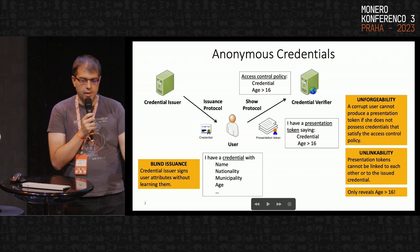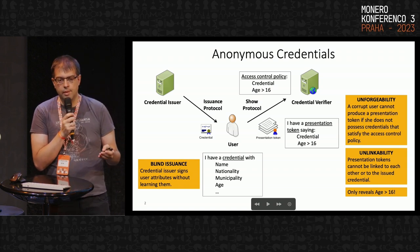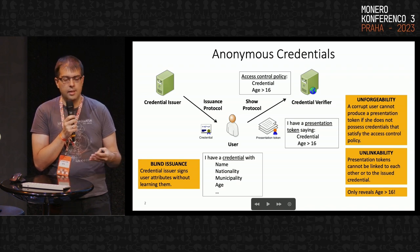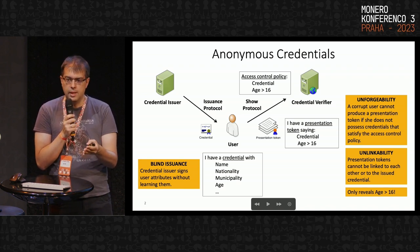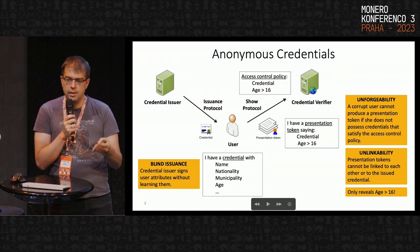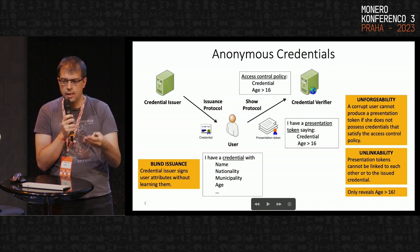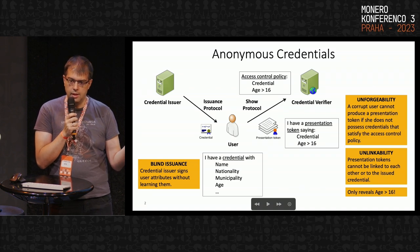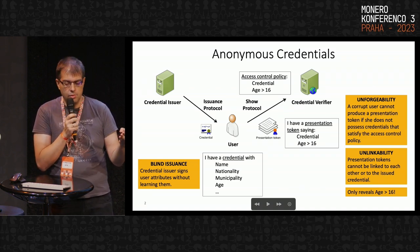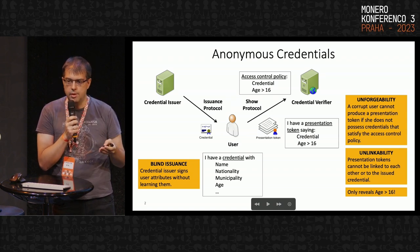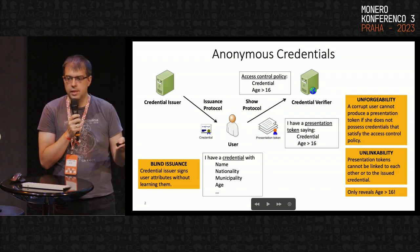Apart from the show protocol, we also have an issuance protocol. In principle, the credential issuer needs to learn all your attributes in order to verify them — it needs to attest your date of birth, etc. But there are cases where this is not necessary. For example, if you already possess an identity card that has certified your attributes, and you need another credential issuer to issue you a new credential containing those same attributes, then you can prove in zero-knowledge that you already have that other credential issued to you, and the new credential issuer doesn't need to learn your attributes again.